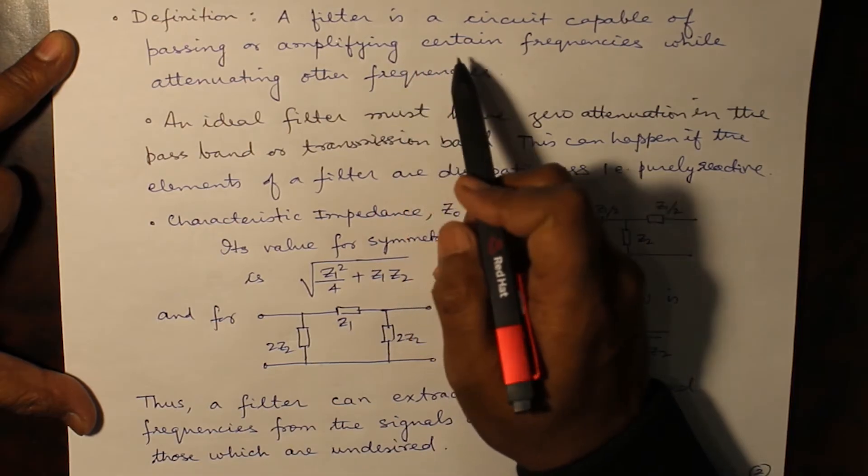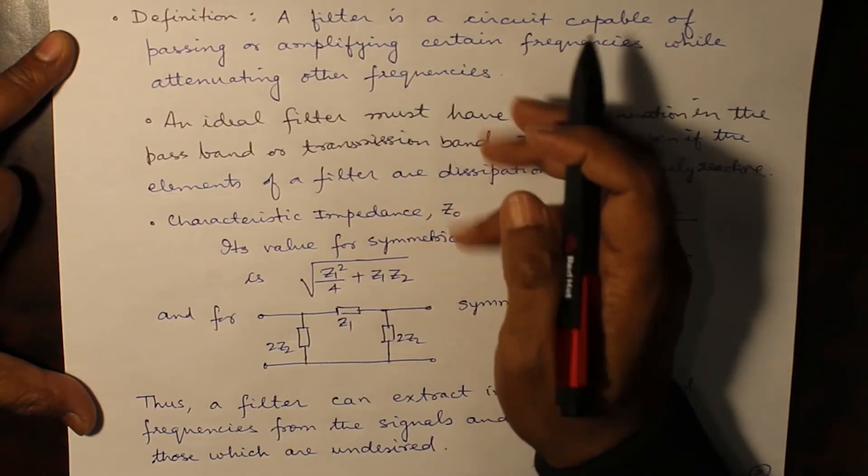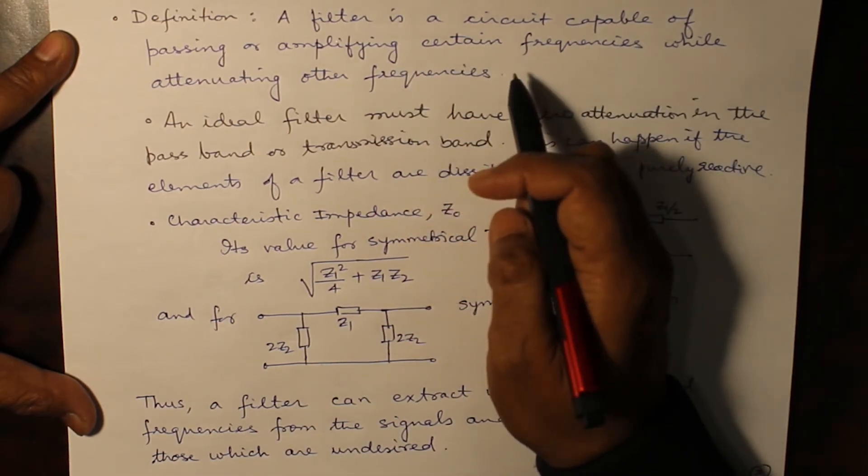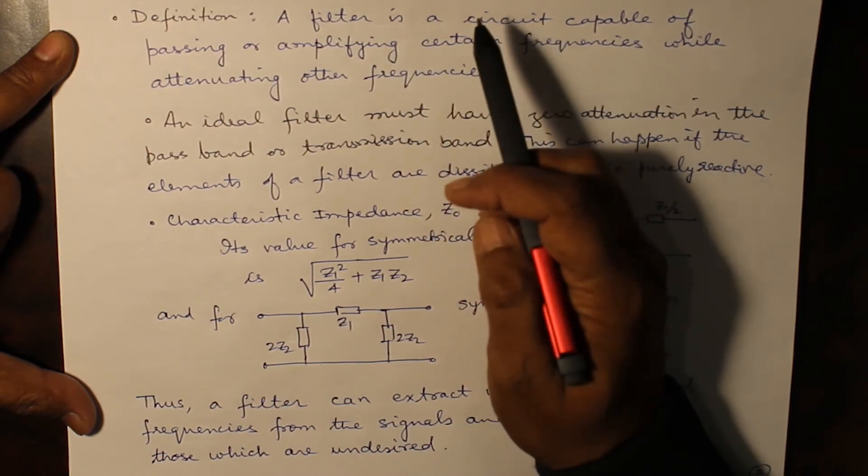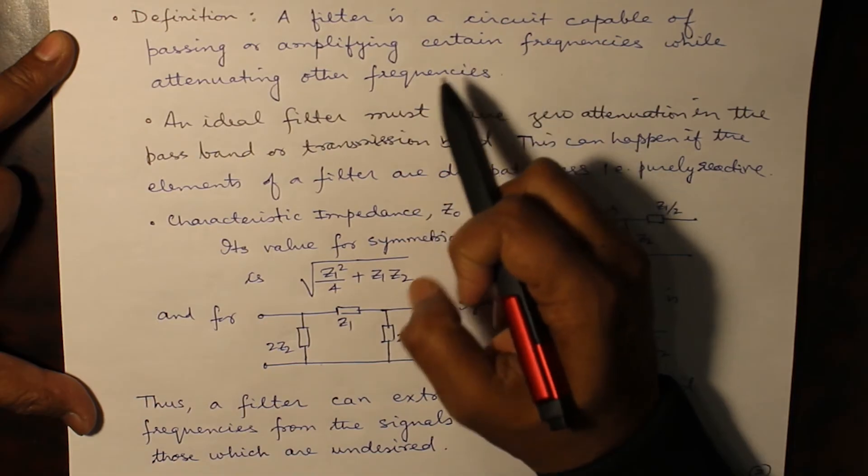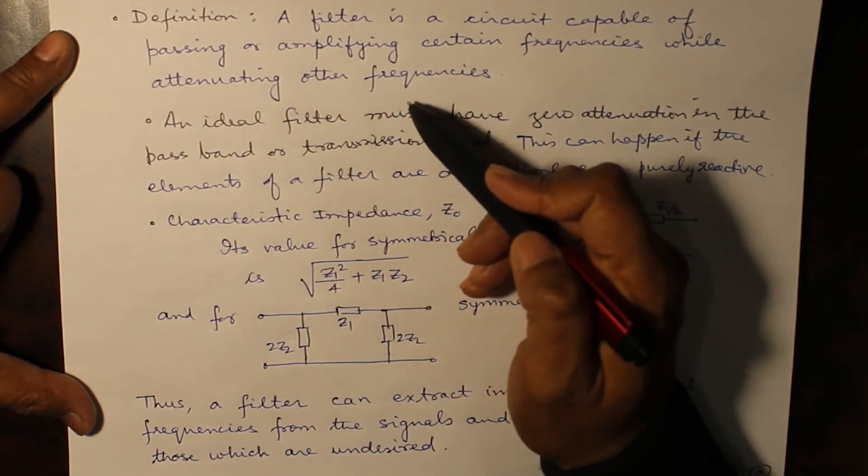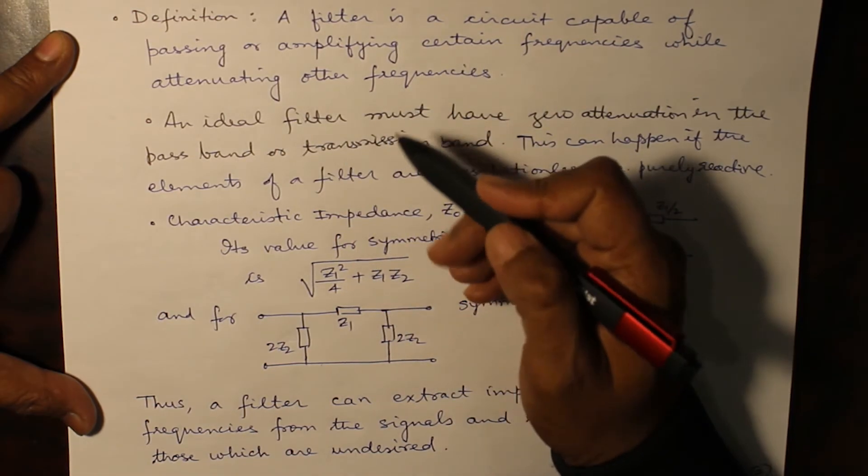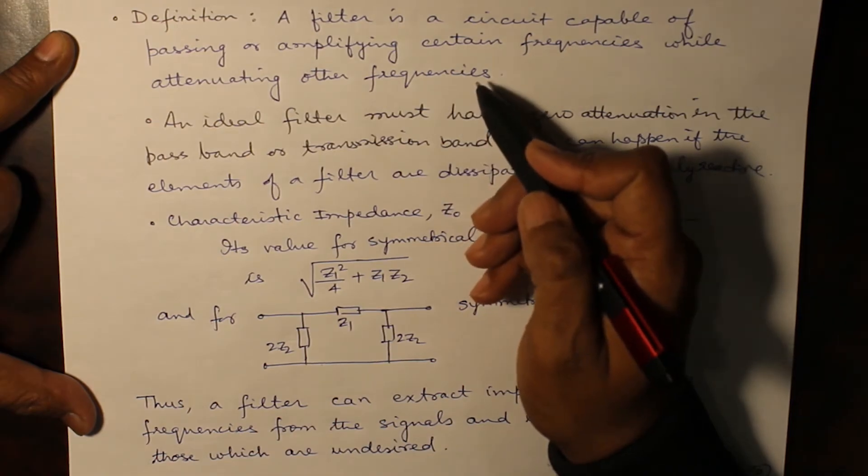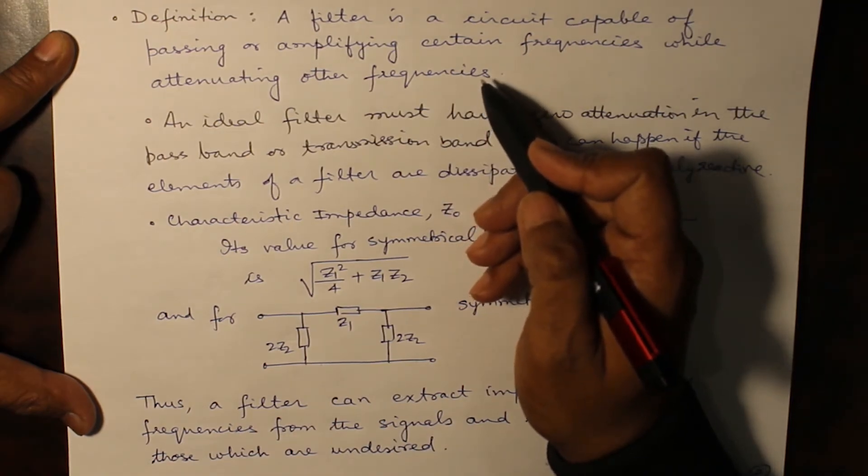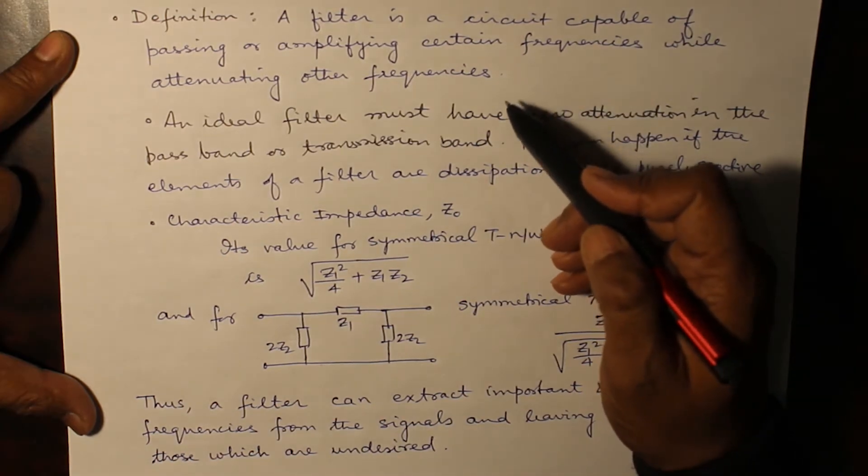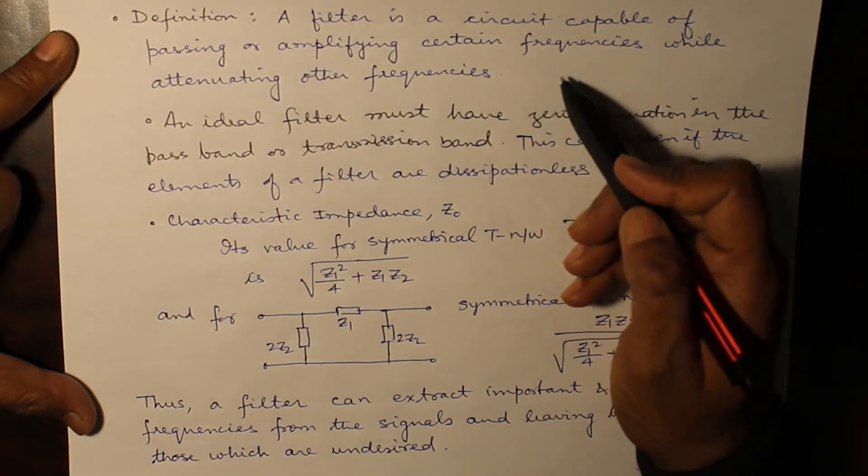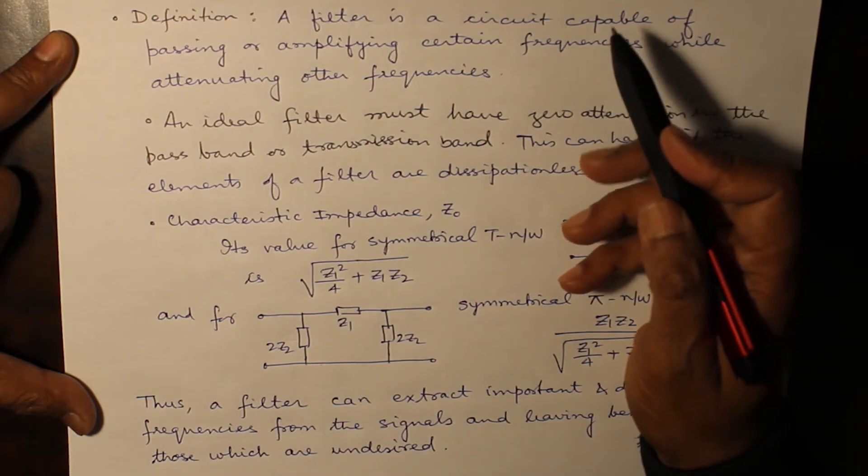A filter permits a certain range of frequency to pass through and does not permit the other range of frequency to pass through. That's it.